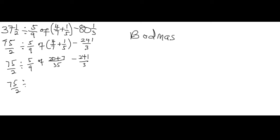Simplifying the bracket: 20 plus 7 over 35 gives us 27/35. So we now have 75/2 divided by 5/9, of 27/35, minus 241/3. The bracket is resolved and we now have a proper fraction 27/35. We move on to the next letter in BODMAS.